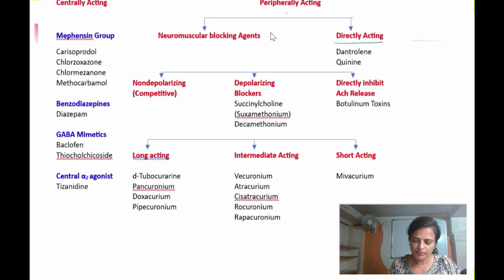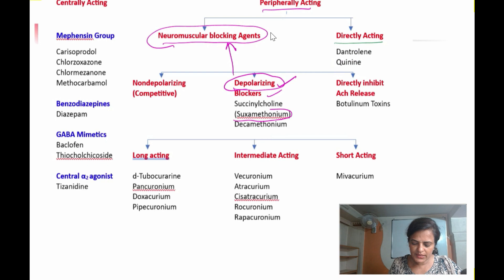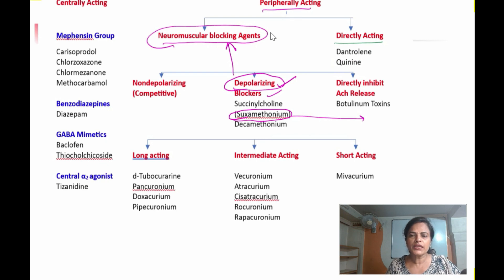Succinylcholine is a peripheral-acting skeletal muscle relaxant. It acts by blocking the neuromuscular junction, so it is also called a neuromuscular blocking agent because it depolarizes the neuromuscular junction — making it a depolarizing blocker. Another name for succinylcholine is suxamethonium. It is a quaternary ammonium compound formed by joining two acetylcholine molecules.